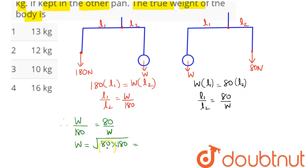So we can say this comes out to be 10 × root 8 is 2√2, and root 18 is 3√2. So this comes as 6 × 2 = 12. So 120 newton is the weight of the body.